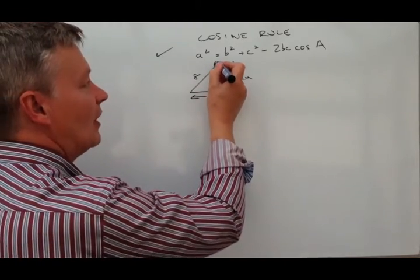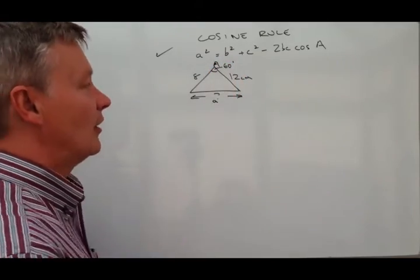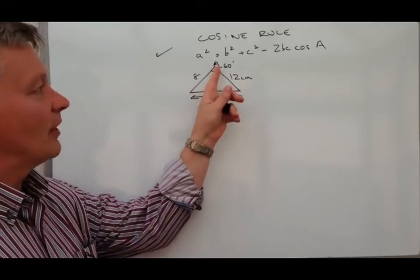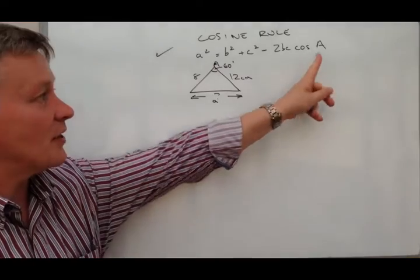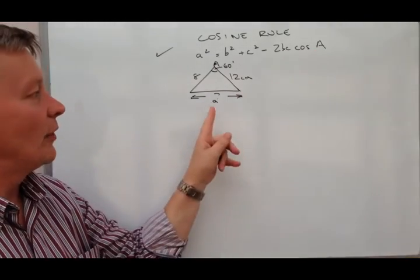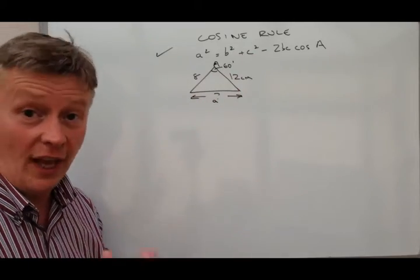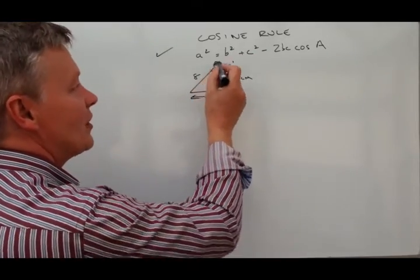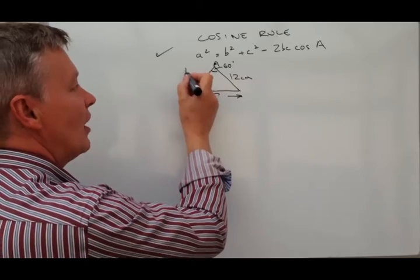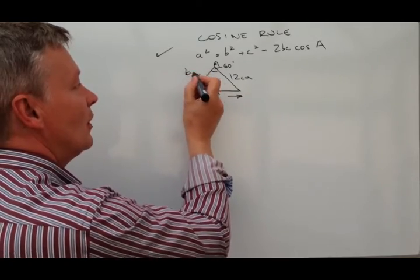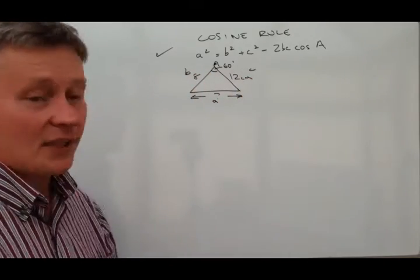So what we've got here is capital A for the 60 degrees, and that's the bit that's going to go here, and we've got A which is this bit here, and B and C are the two lengths which are either side of the angle, so it doesn't really matter which way we'll call it, we'll call that B and call that C.